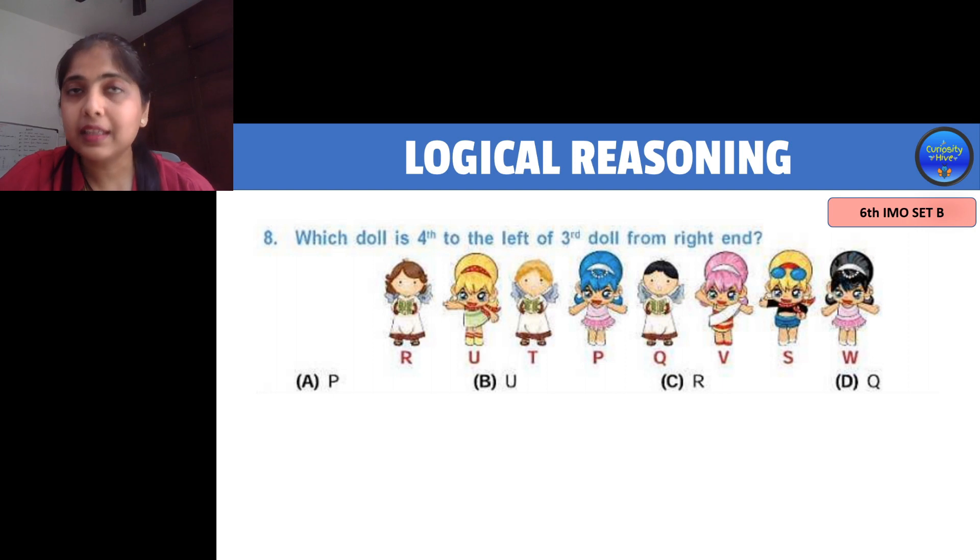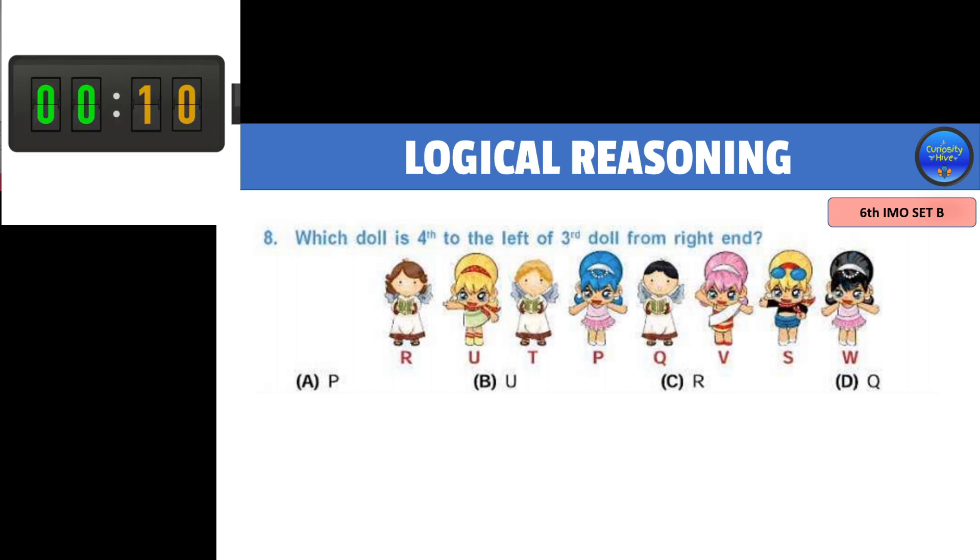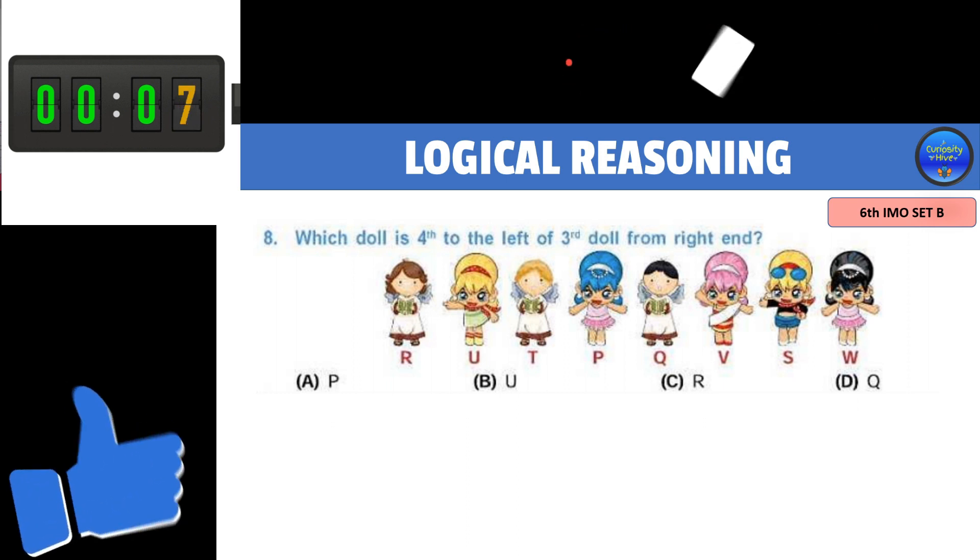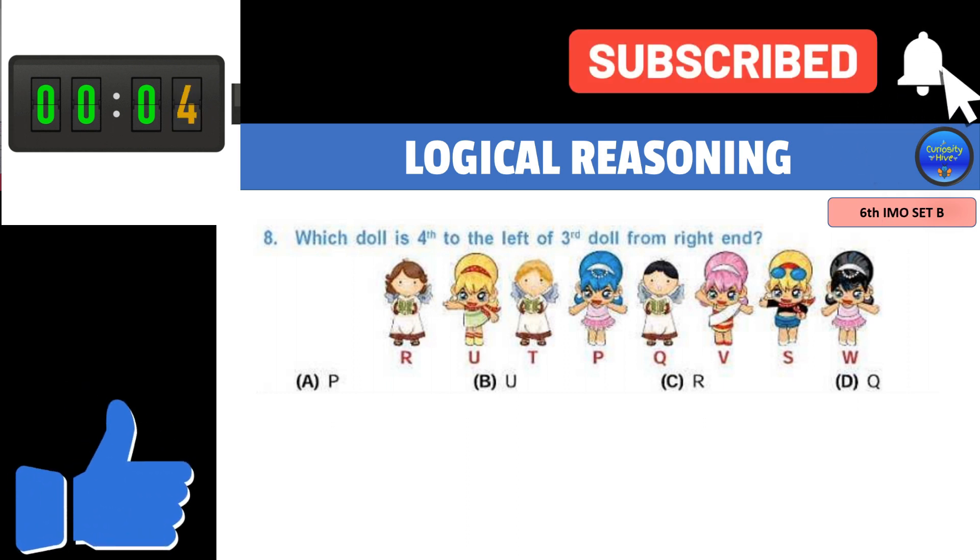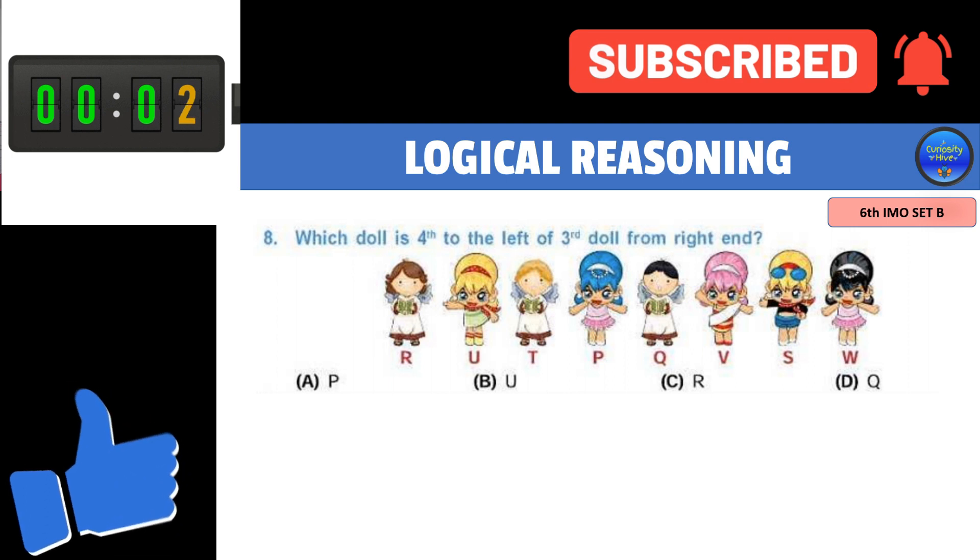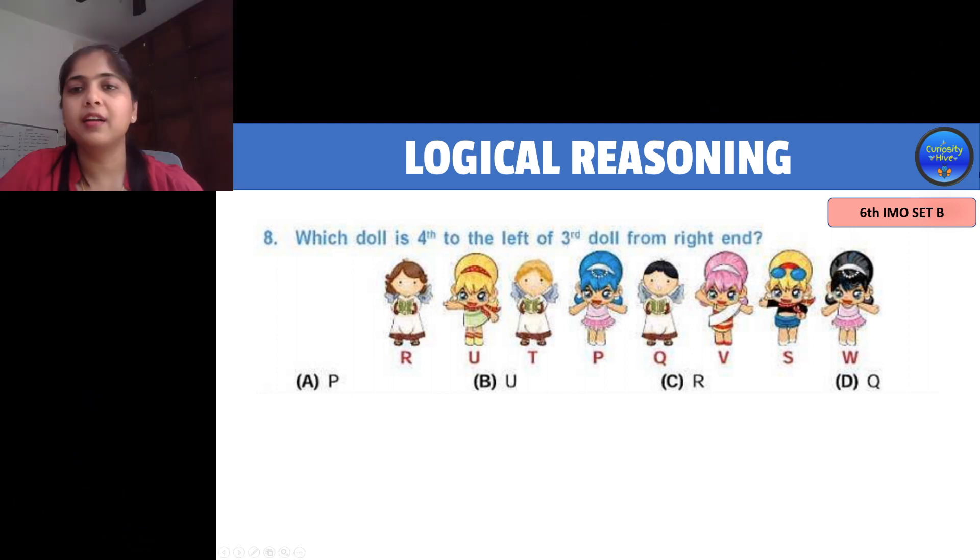To the next question, which is an arrangement question. Read the question carefully and choose your right answer. In these kind of questions, you should start reading from the last end. The last part says find the right end of this line. Let's read the part prior, which says third doll from right end. So third doll from right end is doll V. Now one more part says fourth to the left of third doll.